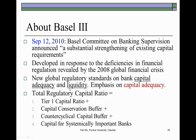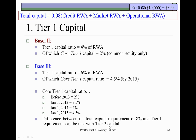In Basel III, the total regulatory capital ratio should not only include the Tier I capital ratio, which was already addressed in Basel II, but additionally a capital conservation buffer, counter-cyclical capital buffer, and capital for systemically important banks. Under Basel II, the total capital a bank must have is equal to 8% of credit risk-weighted assets, market risk-weighted assets, and operational risk-weighted assets.